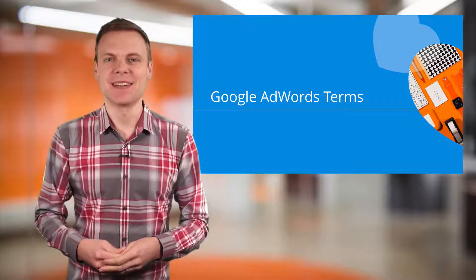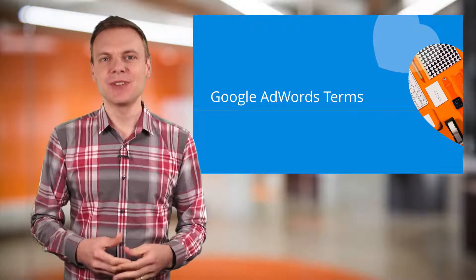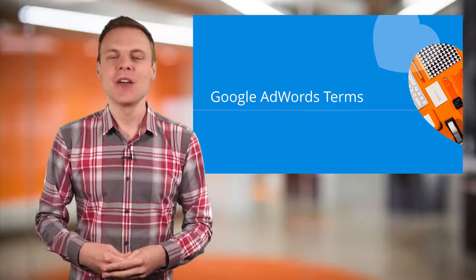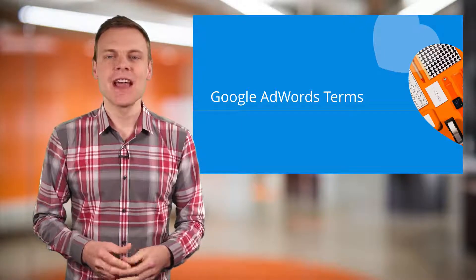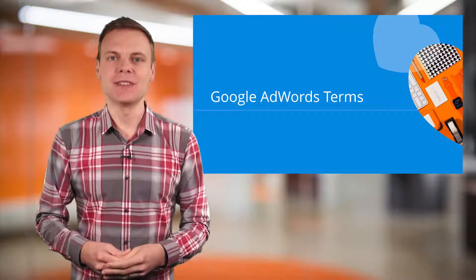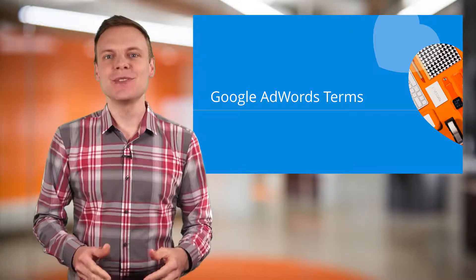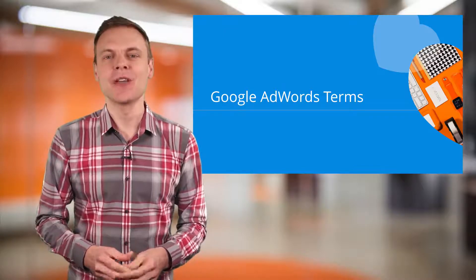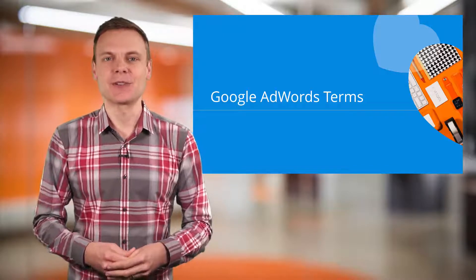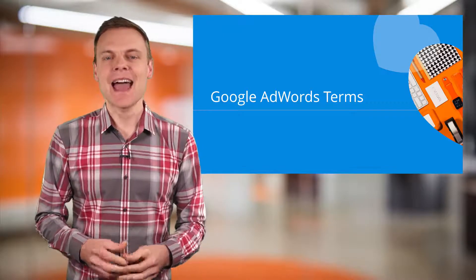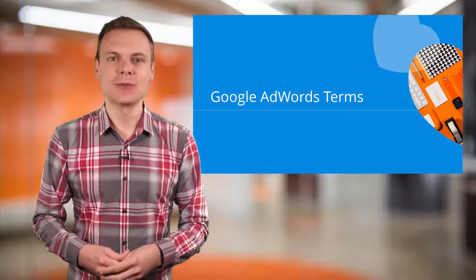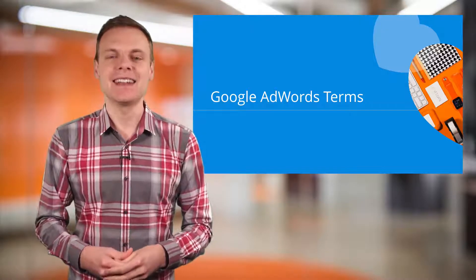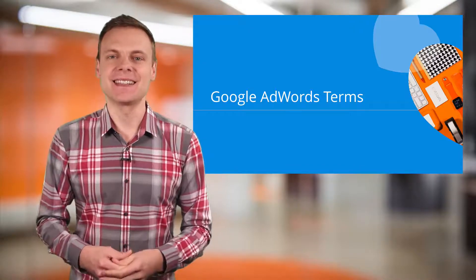Hey there, I'm Benjamin from Loves Data. In this video I'm going to cover 10 Google AdWords terms you need to know. You'll learn about customer match, attribution, bid adjustments, remarketing and more. This video is the perfect complement to my popular Google AdWords glossary — you'll find the link in the description below. Stick around and let me know in the comments if you know all of the terms we cover. Let's get started.